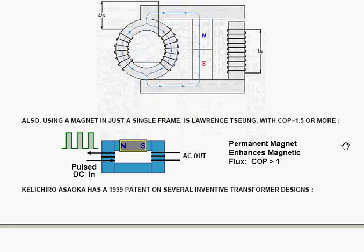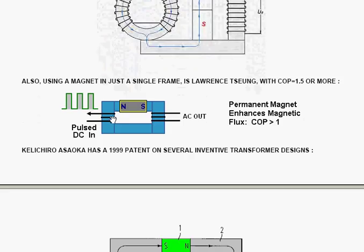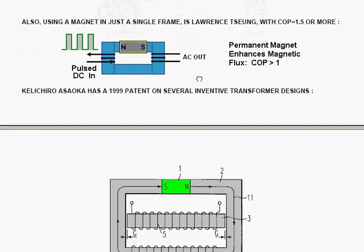Also using a magnet in just a single frame is Lawrence Tiong, and that has been replicated by an independent forum person with a COP of 1.5, so it's likely that you can get a lot more than 1.5 out of it if you set it up correctly. But the idea is you pulse an input winding that either augments or takes away from the magnetic flux flowing around the magnetic frame due to the permanent magnet. The AC output coil is wound on the other side, and that arrangement gives you an actual power gain.